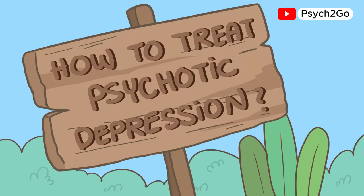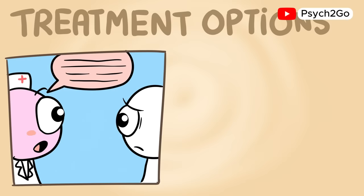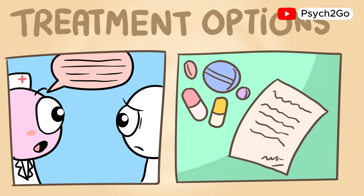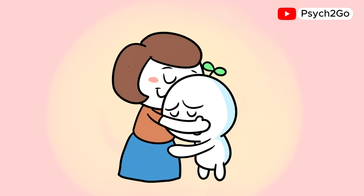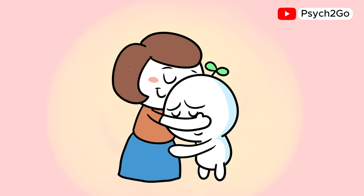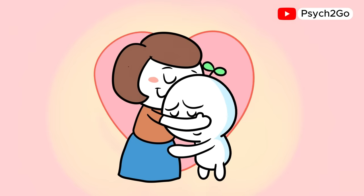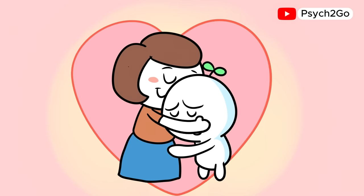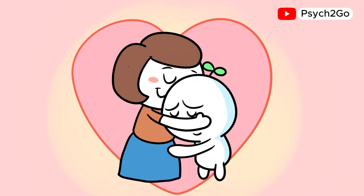How can you treat psychotic depression? There are many treatment options. Cognitive behavioral therapy has proven effective in treating many depressive disorders. There's also the option to take medication — make sure to consult with a licensed professional for a proper medication treatment plan. However, one of the most important treatments can be support. Along with other treatment options, offering support and empathy can make the world of difference to anyone going through depression.